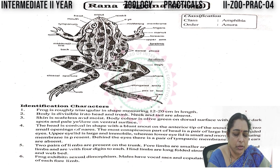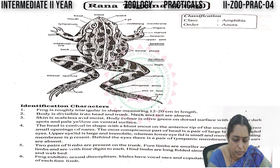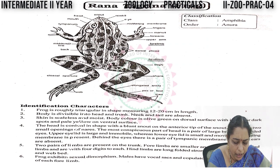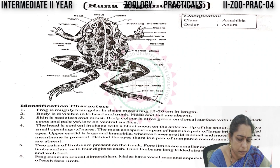The labels include: snout, eyes, nictitating membrane, fore limbs, upper arm, dorsal region, thigh, elongated hind limbs, toes, and cloacal aperture.